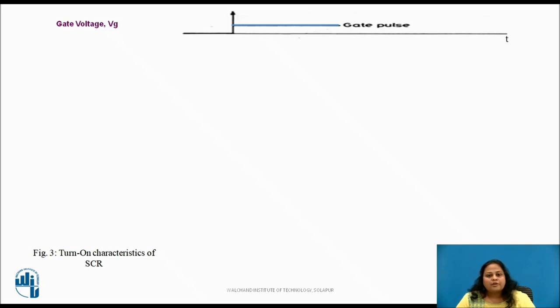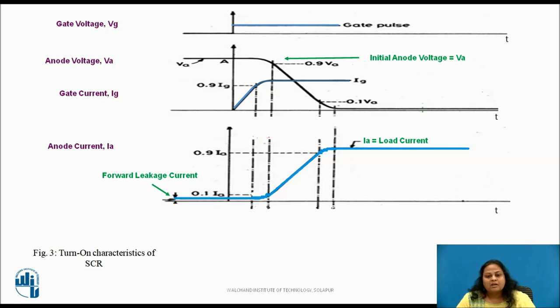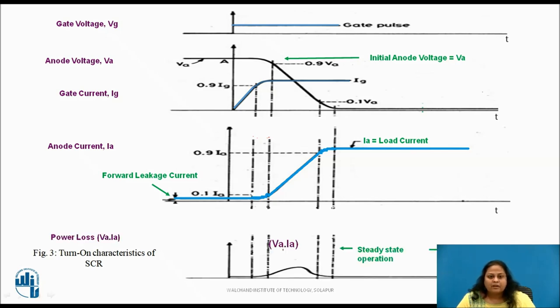Figure shows the gate voltage applied to the SCR. This figure shows the anode voltage across the SCR and the gate current through SCR with respect to time. The initial anode voltage across the SCR is Va. This figure shows the flow of anode current through the SCR with respect to time. Before applying the gate pulse SCR is in off state or forward blocking state and the current flowing through it is a very small forward leakage current as shown. Also, IA is the maximum anode current or load current which flows through the SCR when it is in conducting state and is controlled by the external load resistance connected in the circuit. This figure shows the power dissipation occurring in the SCR during the turn on mechanism.